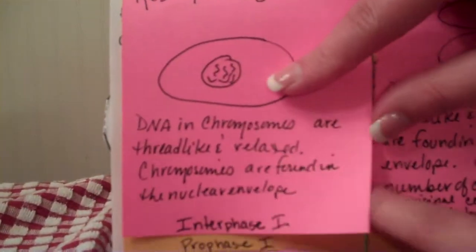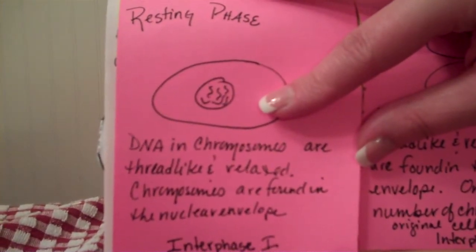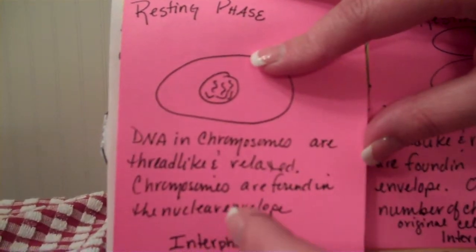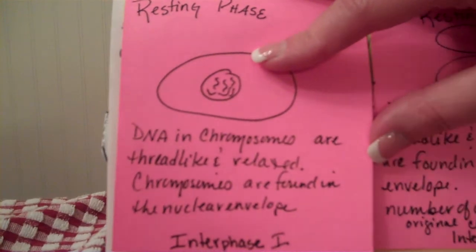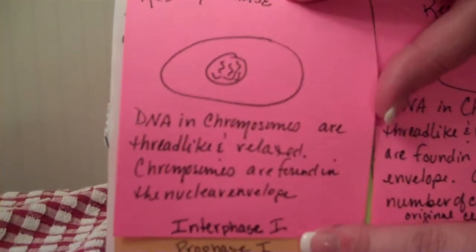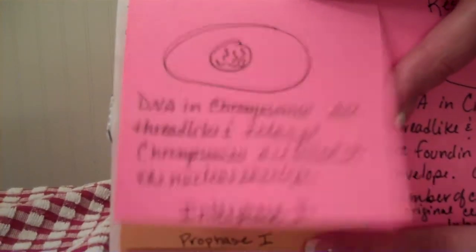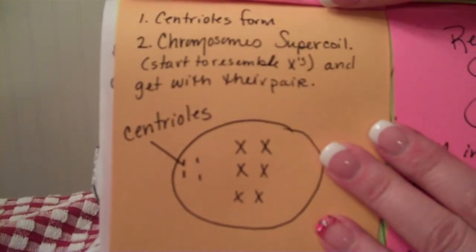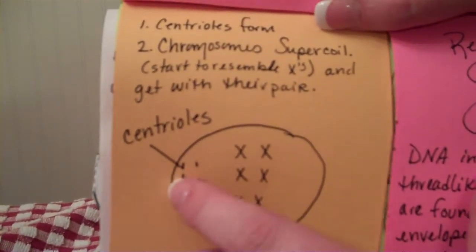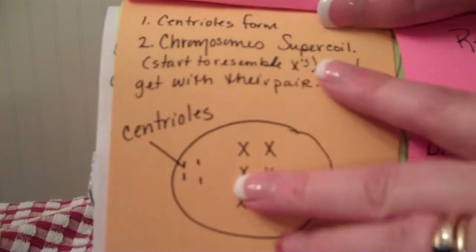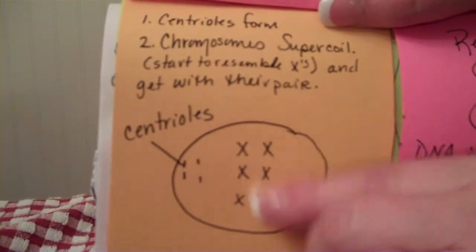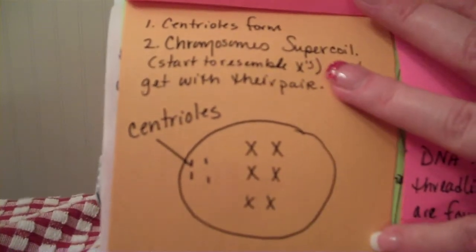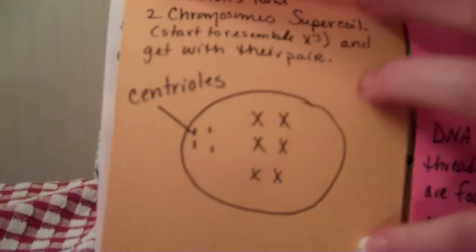This should be fairly familiar, and you should feel comfortable — pause this as you need to so everyone can get it down. This should look kind of similar to something we've already done this week. The next phase is Prophase 1. In Prophase 1, the centrioles form — remember, those are these things out on the side. Chromosomes supercoil and they start to resemble those X shapes, and they get with their pairs. We call those homologous pairs.